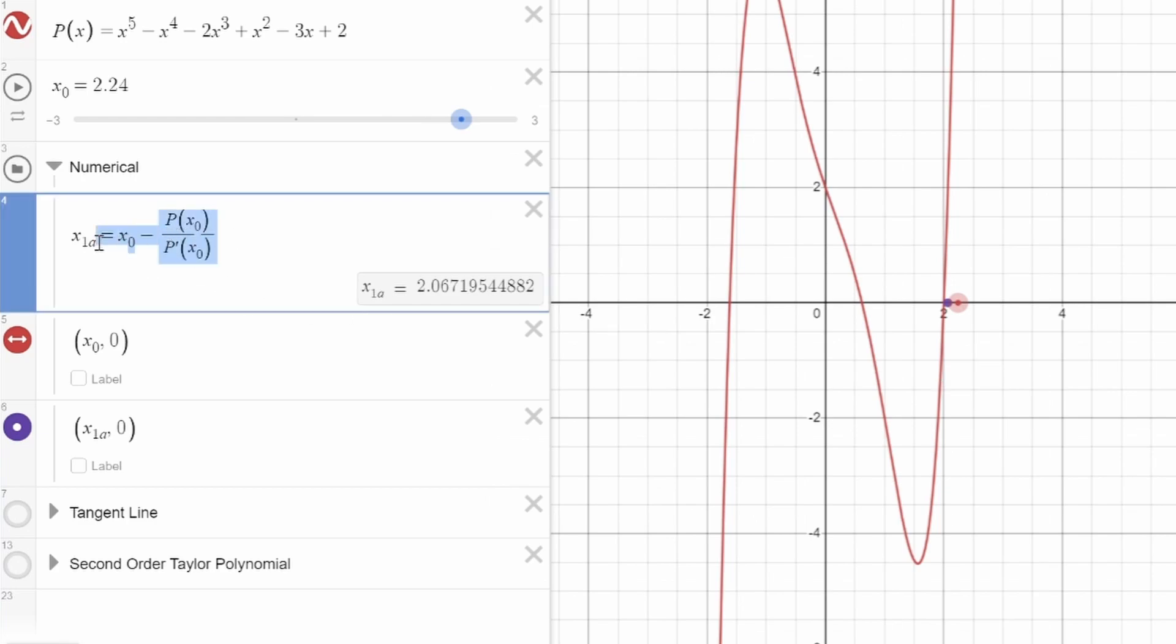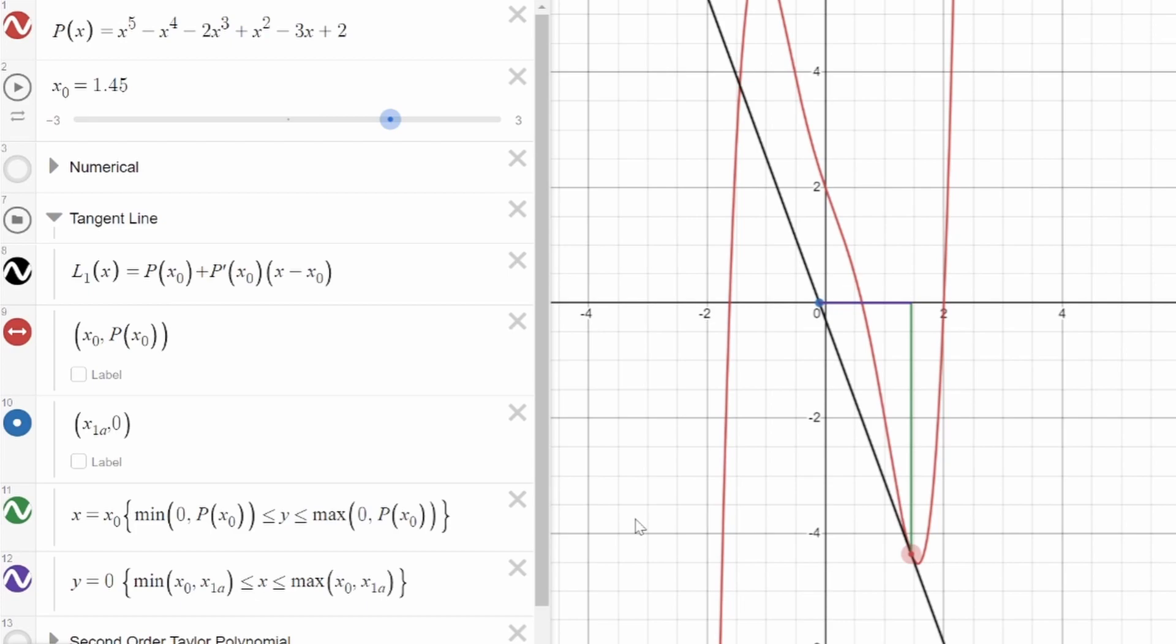And now you might ask, where did this equation come from? Why is it that when you take the x value and subtract it by this fraction, composing of the function and its derivative, that you get this other x value which more closely approximates the roots of this polynomial? To answer that question, we have to look at the tangent line of the polynomial constructed at x0.